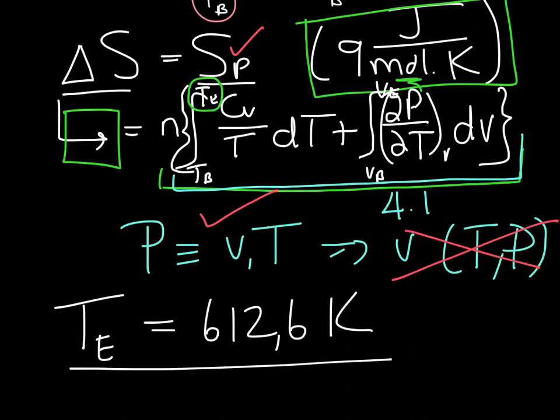Application of this equation with all the correct units should give you an answer for the temperature at the end of 612.6 Kelvin, which would allow you to calculate the work from the delta U equation.